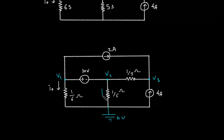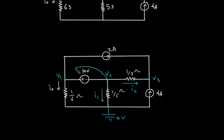Let's assume the direction of currents. Also, this is a supernode — this is node 2 with voltage V1 node.